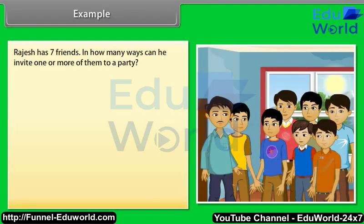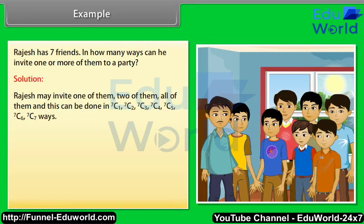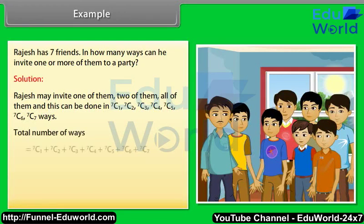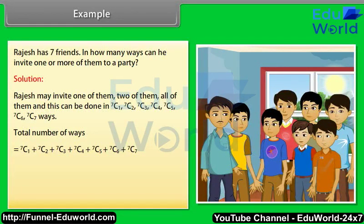Rajesh has 7 friends. In how many ways can he invite one or more of them to a party? Solution: Rajesh may invite 1, 2, 3, … or all 7 of them. Total number of ways = 7C1 + 7C2 + 7C3 + 7C4 + 7C5 + 7C6 + 7C7 = 7 + 21 + 35 + 21 + 7 + 1 = 127 ways.